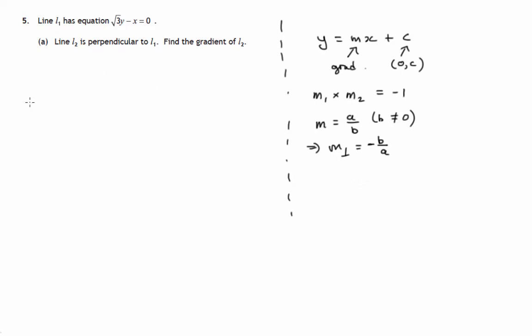So let's go up and tackle part A here. So the equation is root 3y minus x equals 0. And we're trying to get into this form so that we can read off the gradient. So let's add x to both sides. So that disappears and an x appears over there.